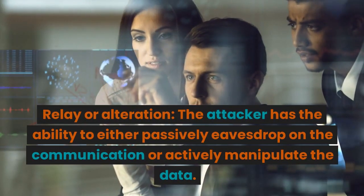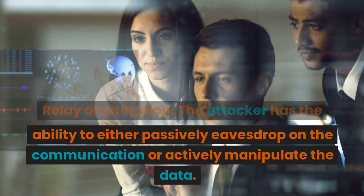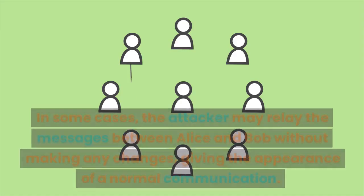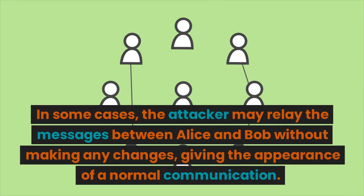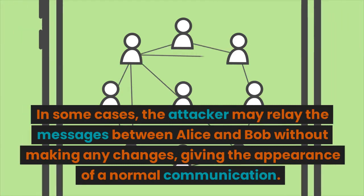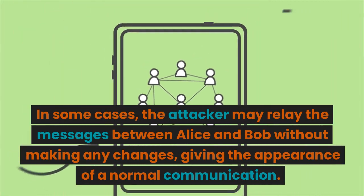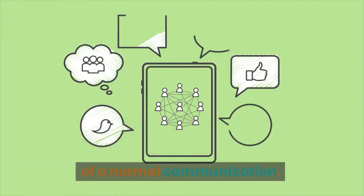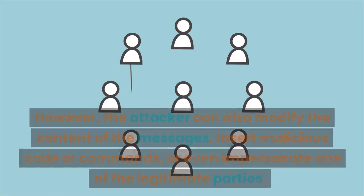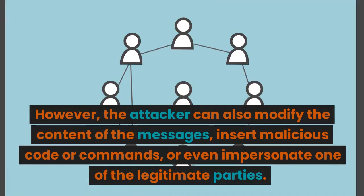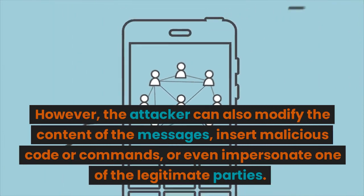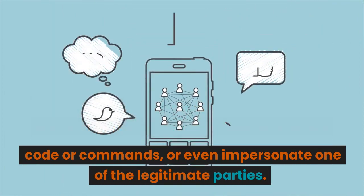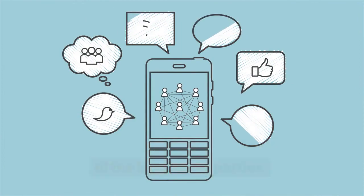Relay or alteration: the attacker has the ability to either passively eavesdrop on the communication or actively manipulate the data. In some cases, the attacker may relay the messages between Alice and Bob without making any changes, giving the appearance of normal communication. However, the attacker can also modify the content of the messages, insert malicious code or commands, or even impersonate one of the legitimate parties.